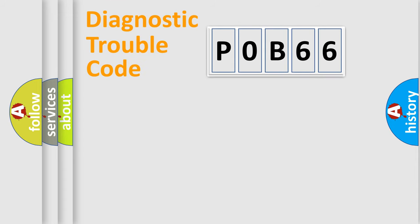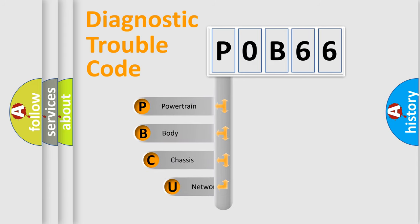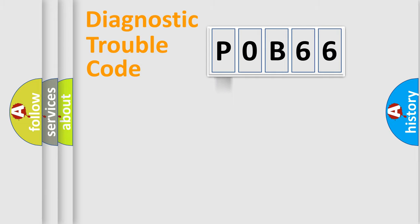First, let's look at the history of diagnostic fault code composition according to the OBD2 protocol, which is unified for all automakers since 2000. We divide the electrical system of an automobile into four basic units: Powertrain, Body, Chassis, and Network.